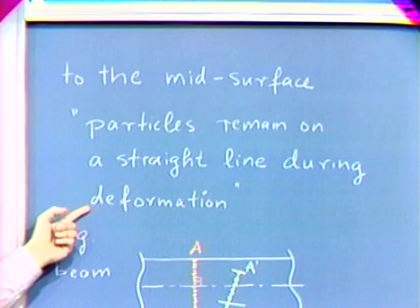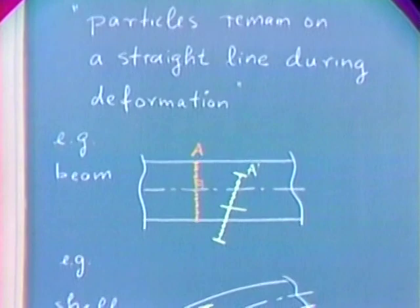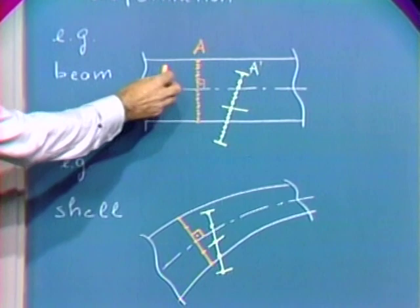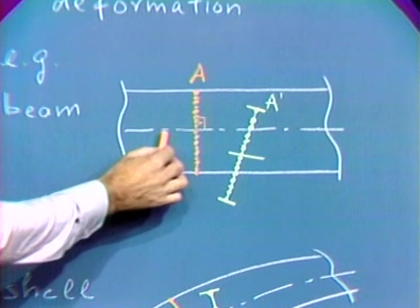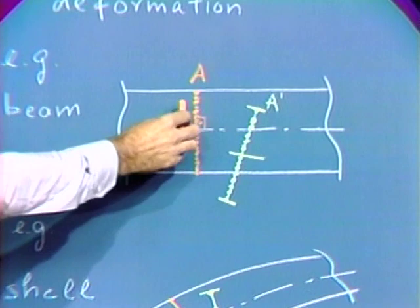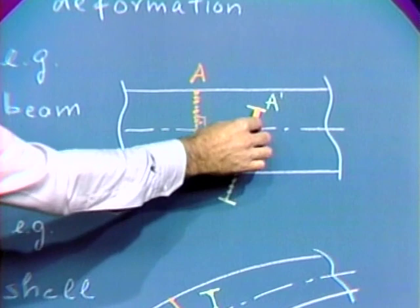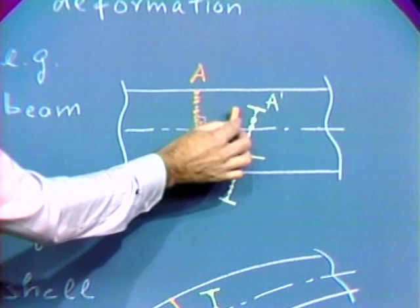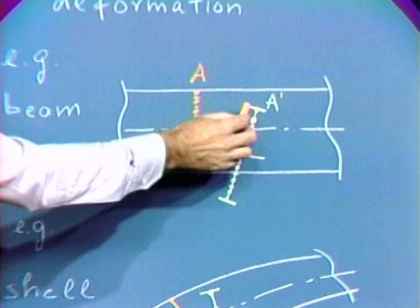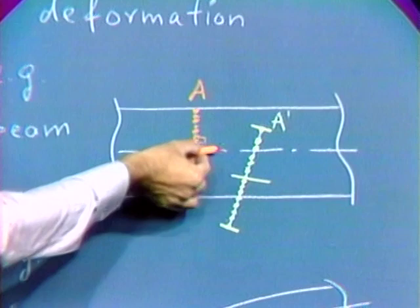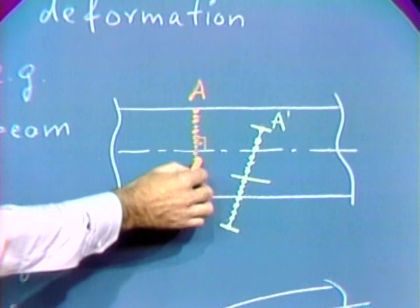As examples, I've shown here two structures, a beam and a shell. Let's look first at a beam. In this case, we have the original particles normal to the mid-surface, or the neutral axis of the beam, on this orange line. I've shown here a large number of particles. The kinematic constraint is that during deformations, these particles remain on a straight line — they move over to the yellow line here. Point A goes to point A prime, and these particles remain on a straight line. That is the basic kinematic assumption. However, we should also notice that there's a right angle between the mid-surface and this line of particles initially, and this right angle is not preserved during deformation.